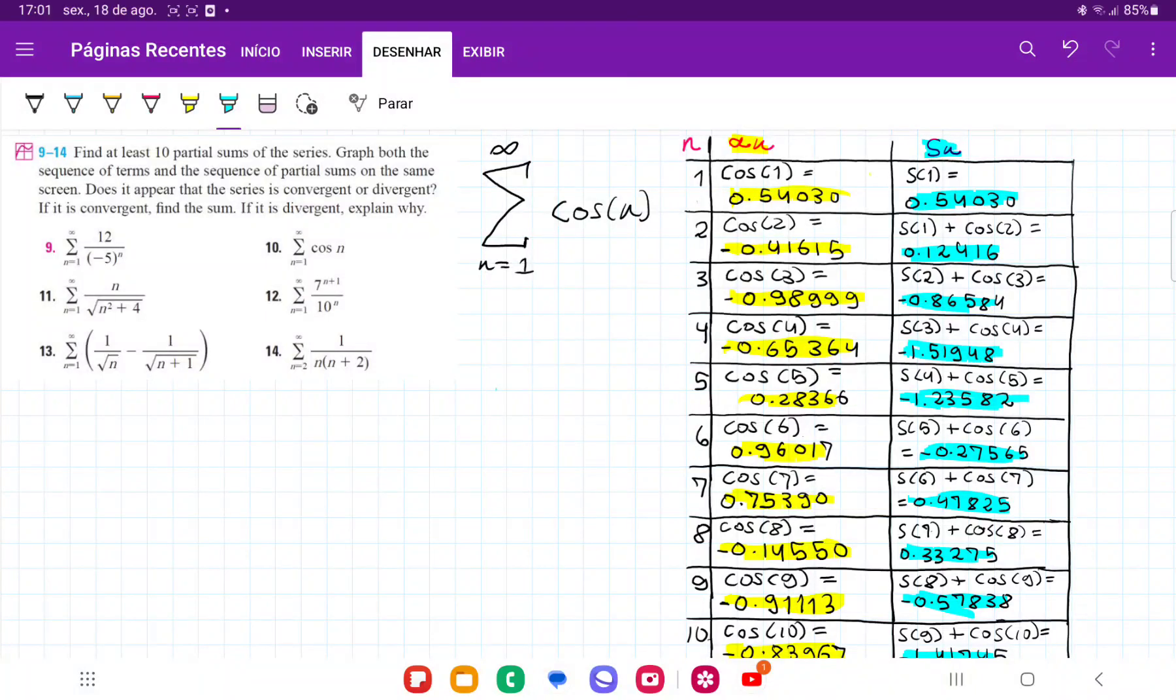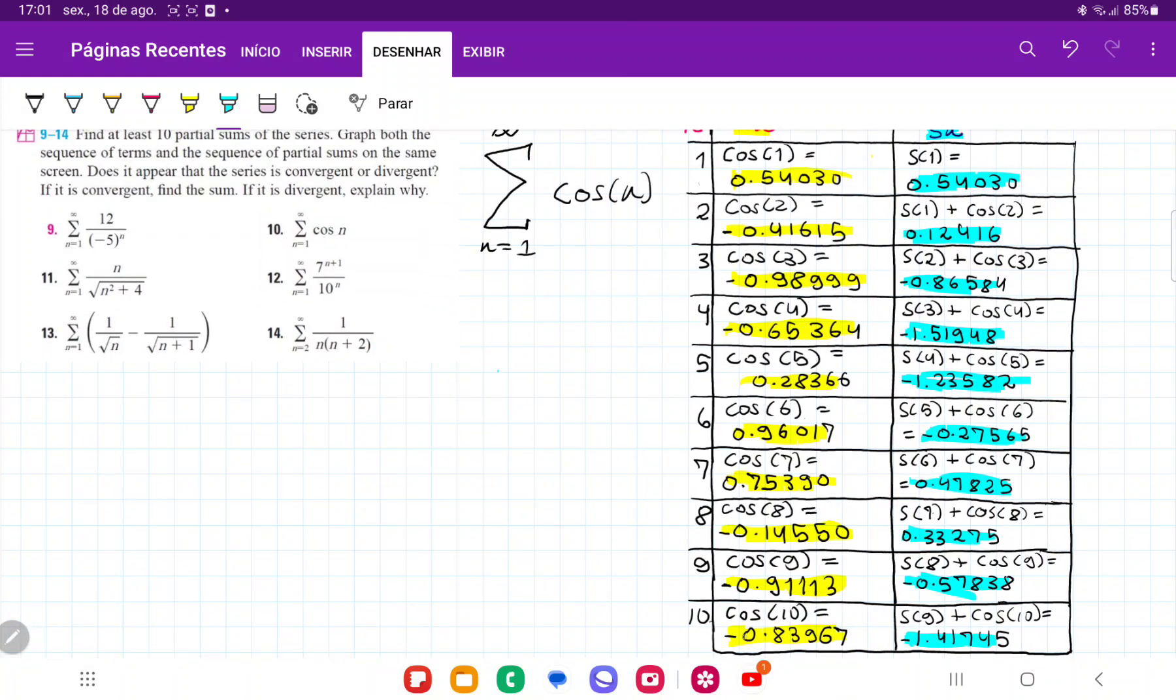So for number 10, it wants us to find at least 10 partial sums of the series, and then to graph both the sequence of terms and the sequence of partial sums. So what I've gone ahead and done is I've put this little table here, where on the second column we have our an, so that's just our sequence. So cosine of 1, cosine of 2, cosine of 3, cosine of 4, and so on, until cosine of 10.